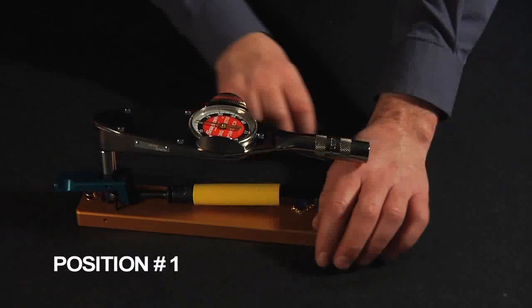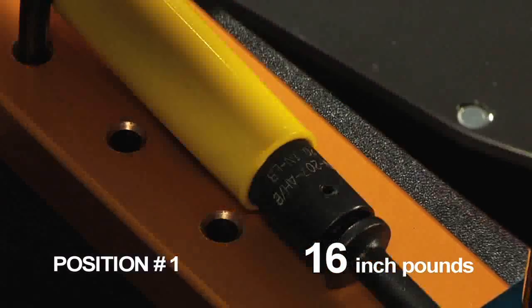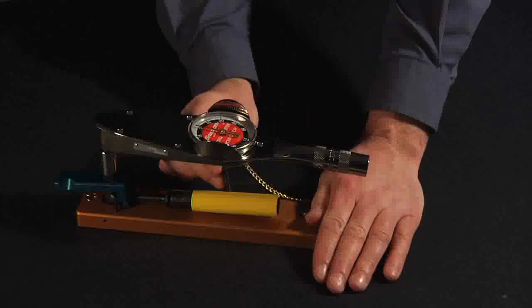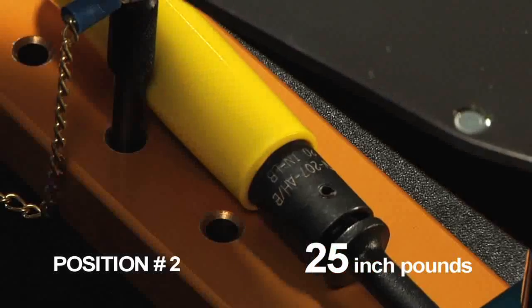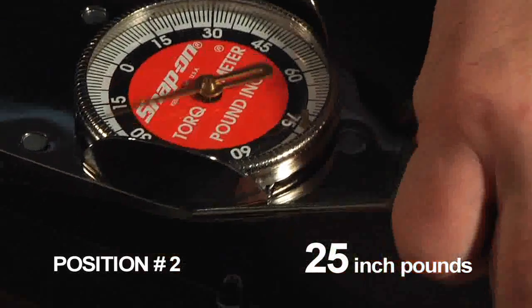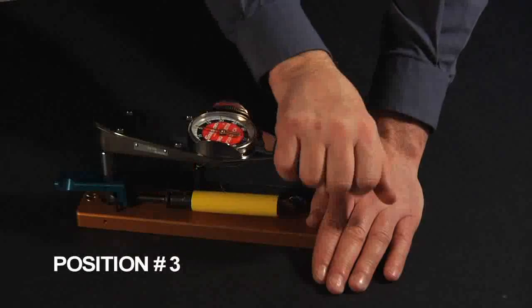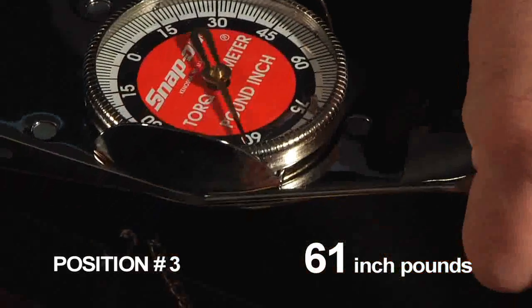The first wrench by one of our competitors provides a torque of 16 inch-pounds when gripped at position one. When gripped at position two, a torque of 25 inch-pounds is exerted. And when gripped at the third position, a torque of 61 inch-pounds is exerted on the F-connector.